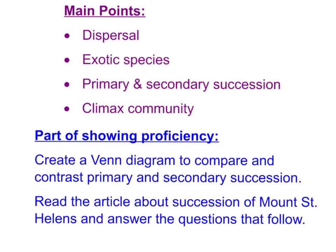So here are our main points: dispersal and different adaptations for dispersal, exotic species, primary and secondary succession, and a climax community. Your assignments include creating a Venn diagram to compare and contrast primary and secondary succession, and reading the article about Mount St. Helens and answering the questions that follow. For advanced proficiency, dig a little deeper into some of these ideas and come share what you find in class.